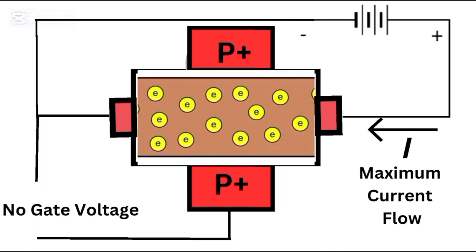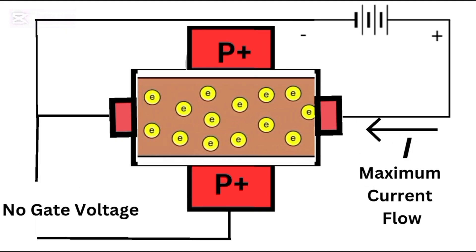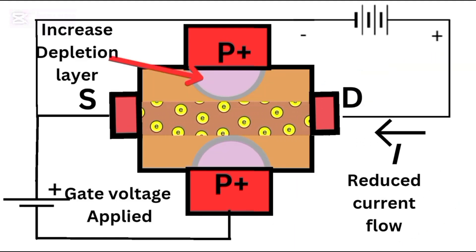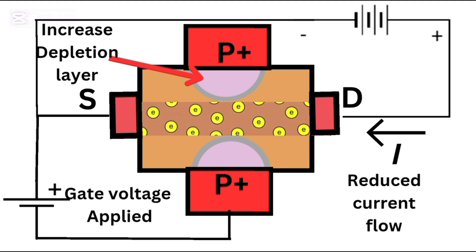But what if you make VGS positive? Now you're enhancing the already existing channel and current increases even more. So, the depletion mode MOSFET works in both depletion and enhancement. It gives more flexibility than the enhancement mode type.